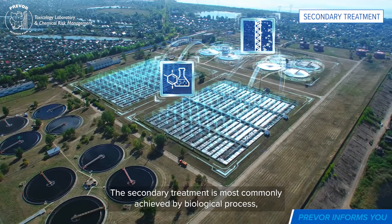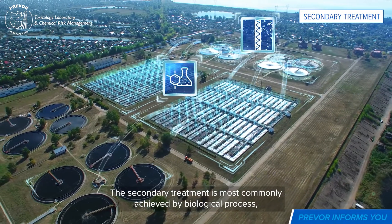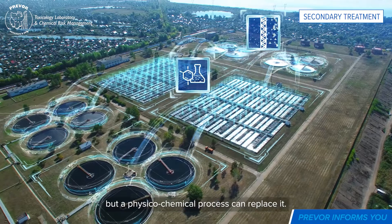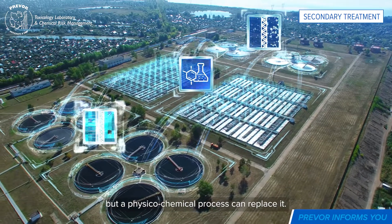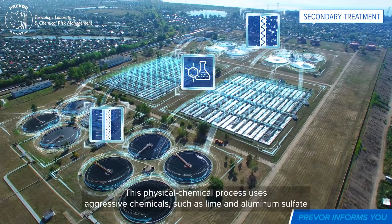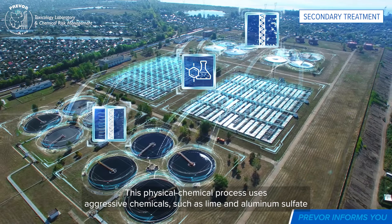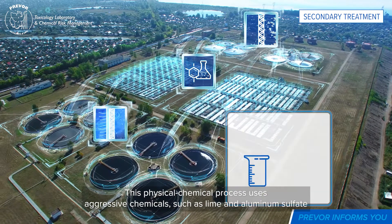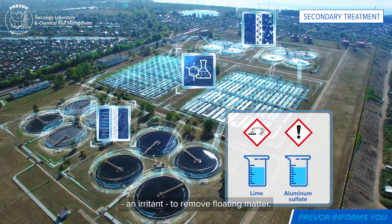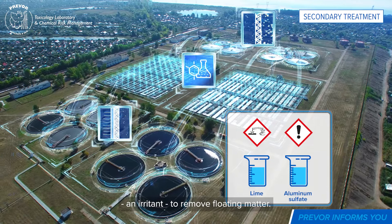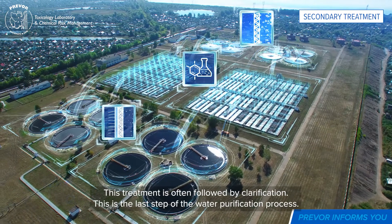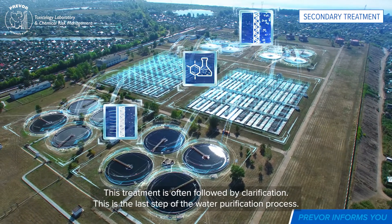The secondary treatment is most commonly achieved by a biological process, but a physico-chemical process can replace it. This physico-chemical process uses aggressive chemicals such as lime and aluminium sulfate, an irritant, to remove floating matter. This treatment is often followed by clarification.